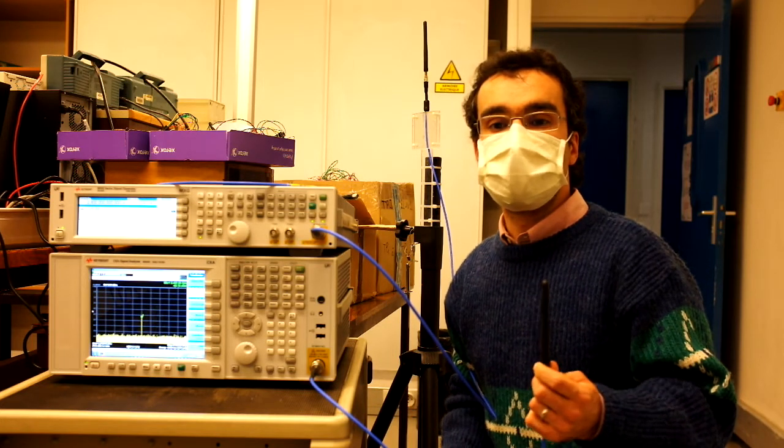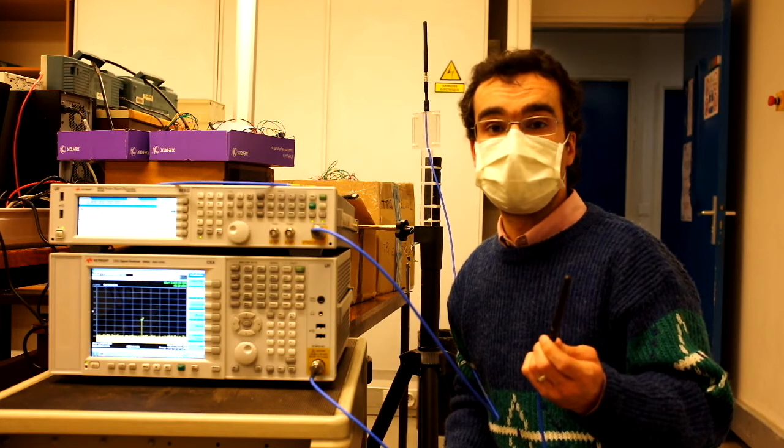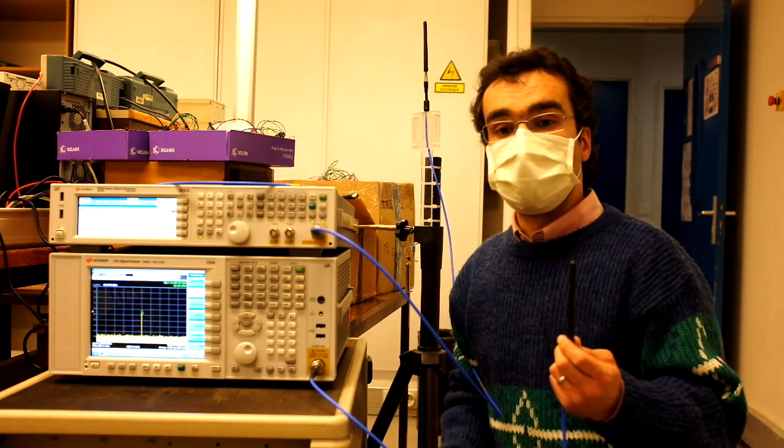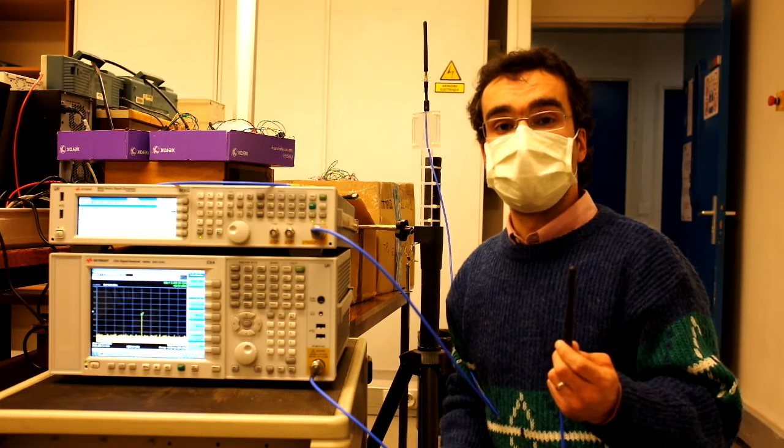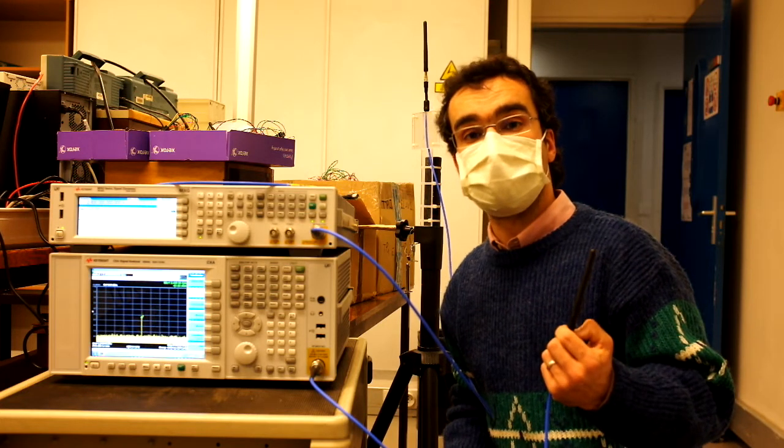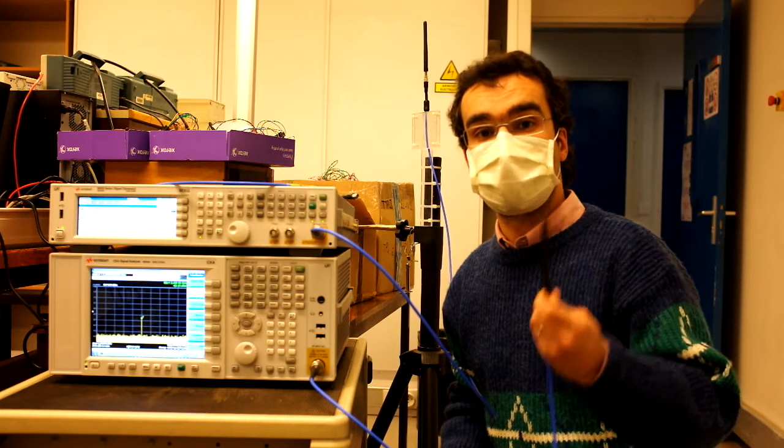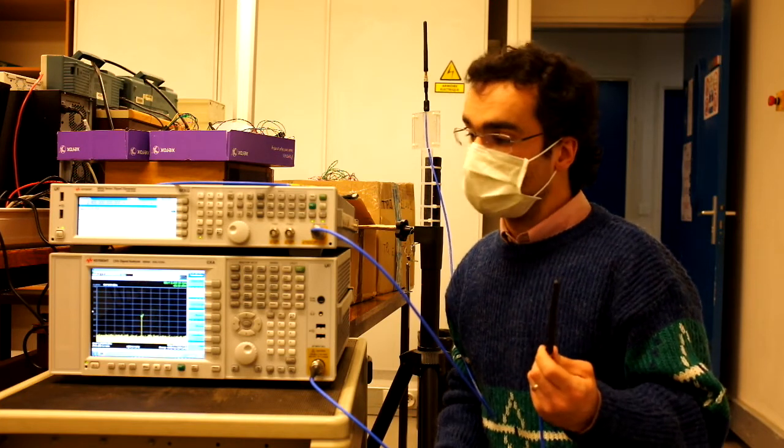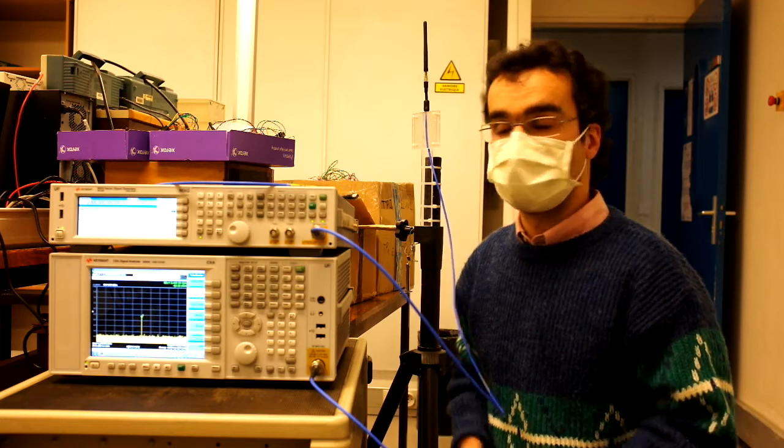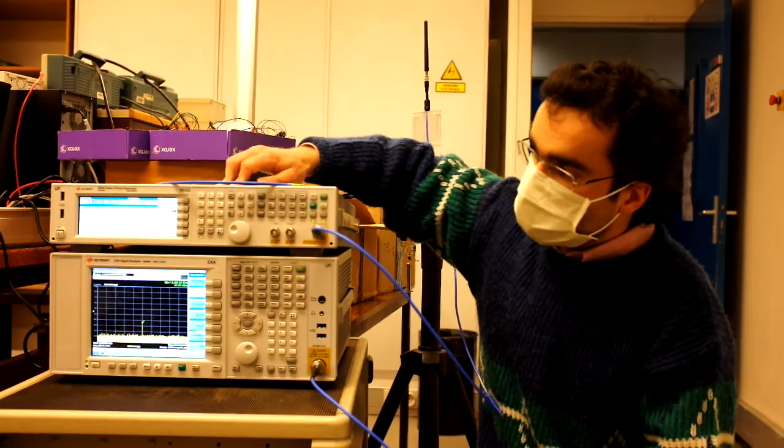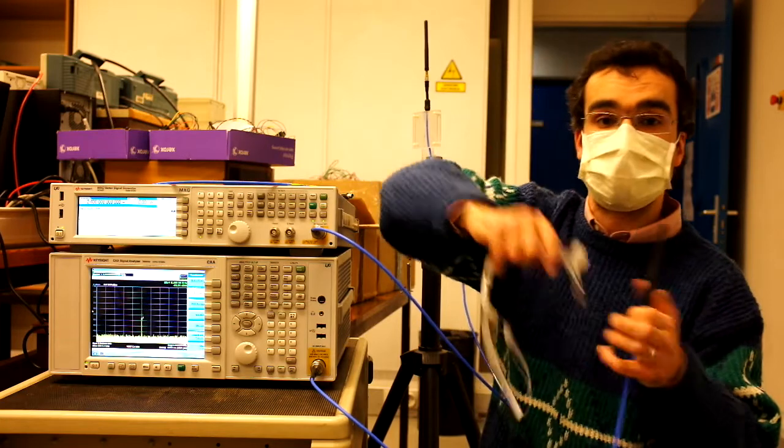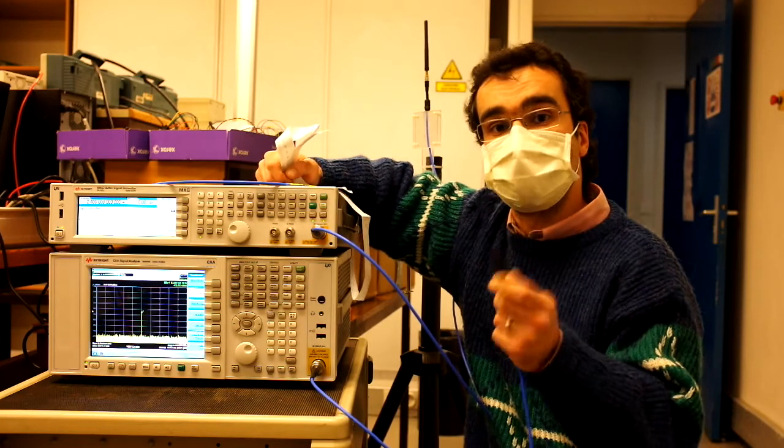This measurement is just in order to check if the antenna is good or not. This measurement is based on the free space loss equation made by Friis. To do this demonstration we are going to use a radio frequency generator tuned to 2.4 GHz because those antennas we are going to measure are working on 2.4 GHz.